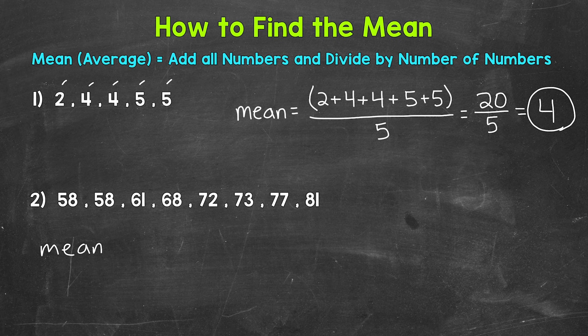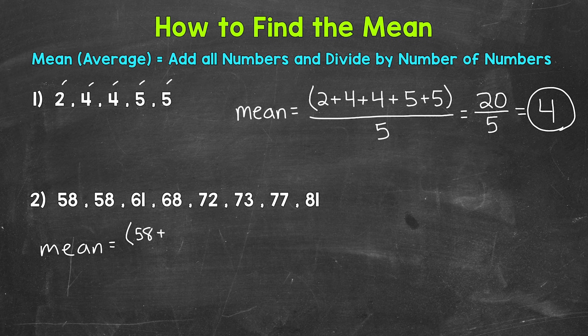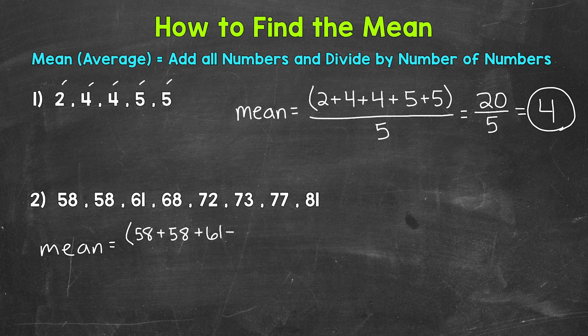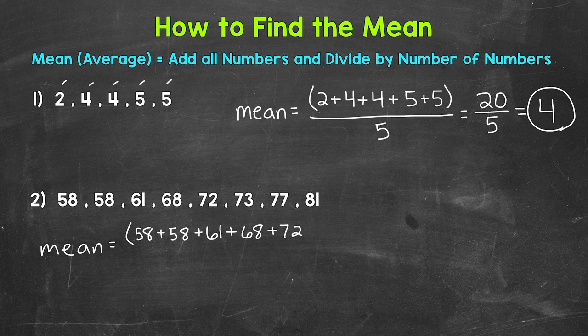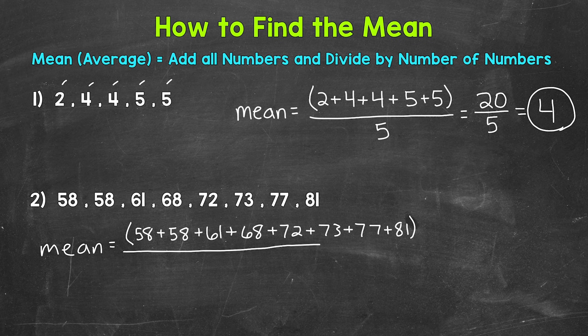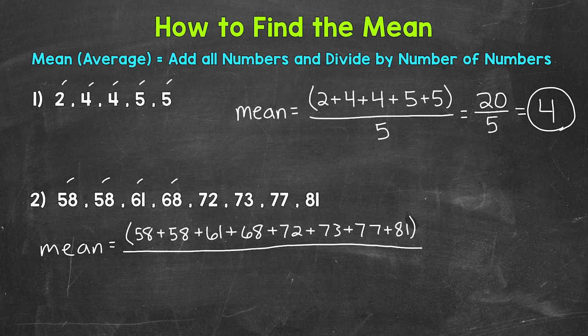We have mean equals, and then we will add all of our numbers. So we have 58, plus 58, plus 61, plus 68, plus 72, plus 73, plus 77, plus 81. And then we'll divide by the number of numbers in the data set. So we have 1, 2, 3, 4, 5, 6, 7, 8. So we need to divide by 8.